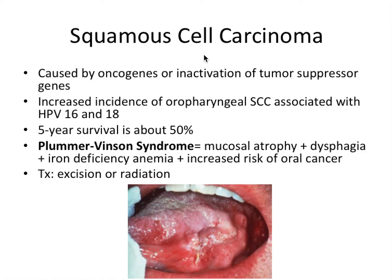Verrucous carcinoma is sometimes called snuff dipper's carcinoma due to its direct relation with chewing tobacco. Next, squamous cell carcinoma is caused by oncogenes or inactivation of tumor suppressor genes — the two most common biochemical or genetic mechanisms of cancer formation. Increased incidence of oropharyngeal squamous cell carcinoma is associated with HPV 16 and 18. The five-year survival is unfortunately about 50%.